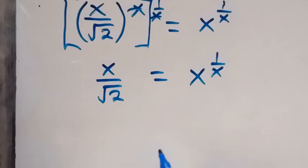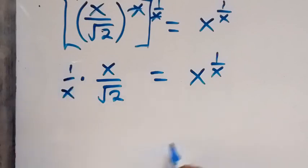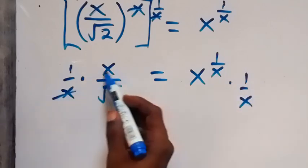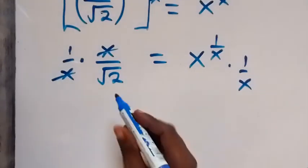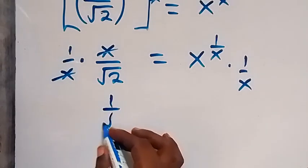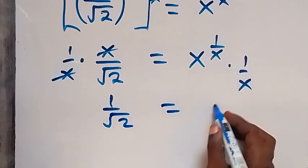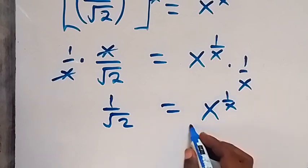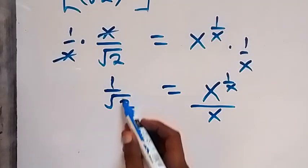In the next step we remove this x by dividing both sides by x — the same as multiplying both sides by 1 over x. The x cancels on the left, leaving 1 over root 2, which equals x raised to power 1 over x, all over x.